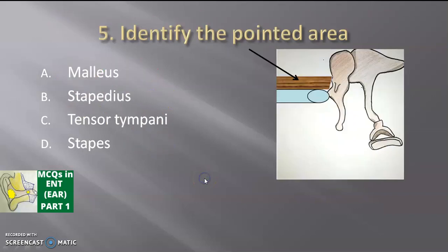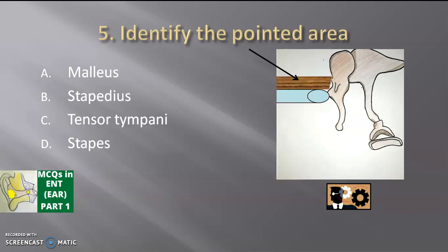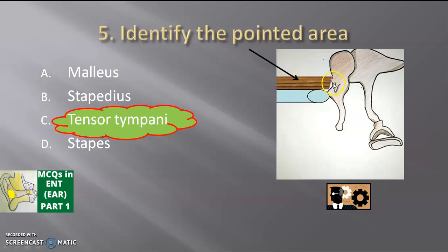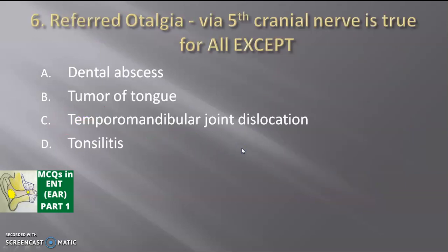Next, identify the pointed area in the picture. Options: malleus, stapedius, tensor tympani. The answer is tensor tympani, attached to the neck of the malleus at the junction with the handle. When it pulls, it pulls the tympanic membrane inwards. The malleus, incus, and stapes are also visible; the muscle attached to the stapes is stapedius.